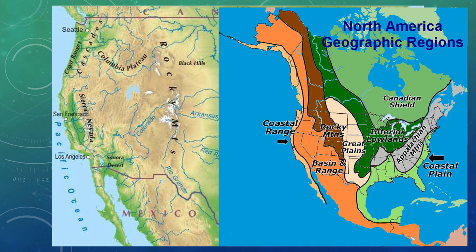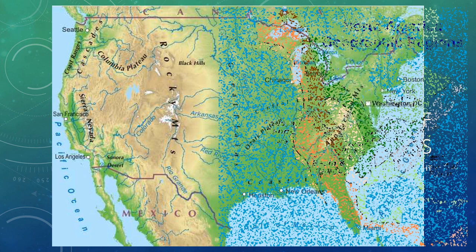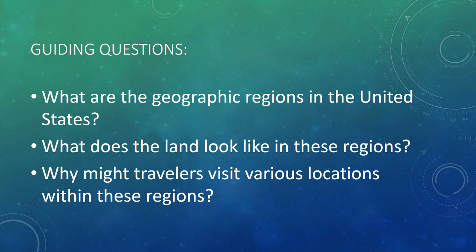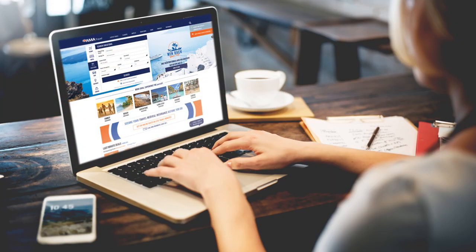As we move through the following slides and pictures, have your passport handy and add on to your notes, making sure that you wrote down the main ideas we will cover for each of the eight geographic regions. In this video, we will answer the following guiding questions: What are the geographic regions in the United States? What does the land look like in these regions? And why might travelers visit various locations within these regions? As you begin brainstorming for your plan-a-trip project, consider the different regions and what they have to offer visitors. Suggestions will be given for each of the regions that may spark an idea to inspire your trip planning for the upcoming project. So let's get started!